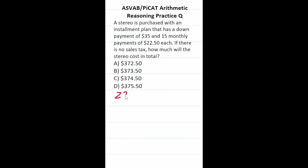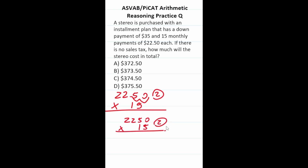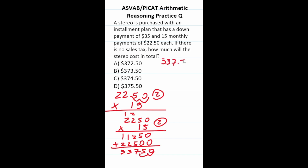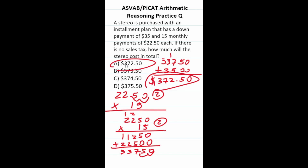This ASVAB PyCat arithmetic reasoning practice test question asks us to calculate the cost of purchasing a stereo using an installment plan. First, we multiply 22.50 by 15 — shifting the decimal two places right gives us 2250 times 15, with two decimals to move back. Working through: 0, 25, carry 2, 12, carry 1, giving 33750. Then moving decimals back gives monthly payments of $337.50. Adding the down payment of $35: the total comes to $372.50.